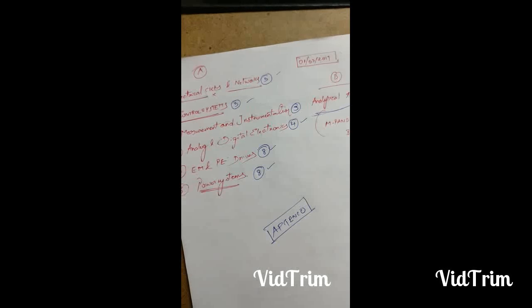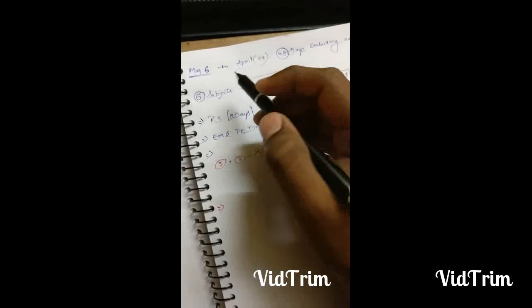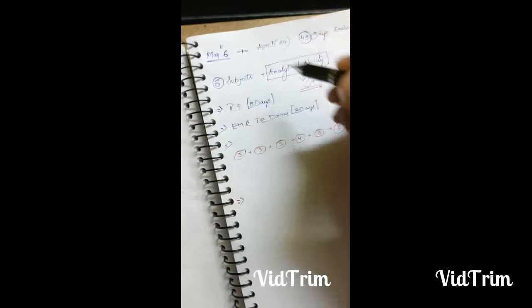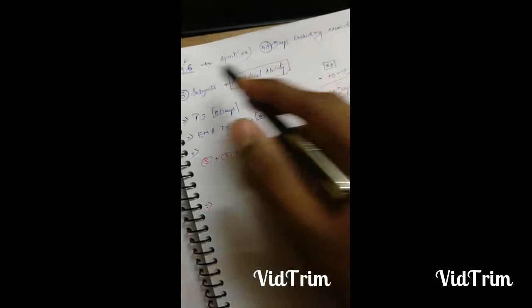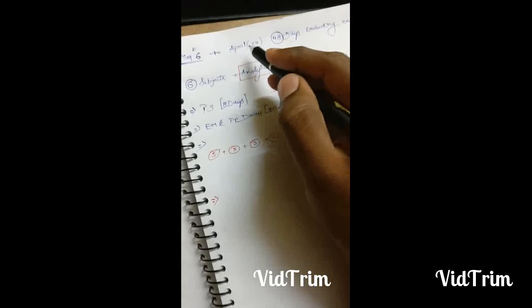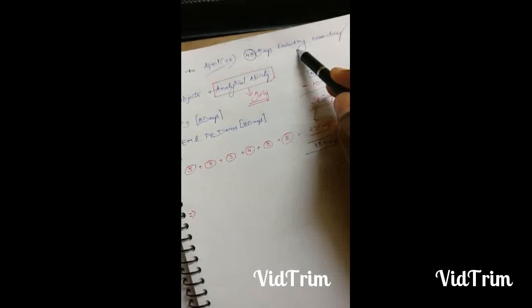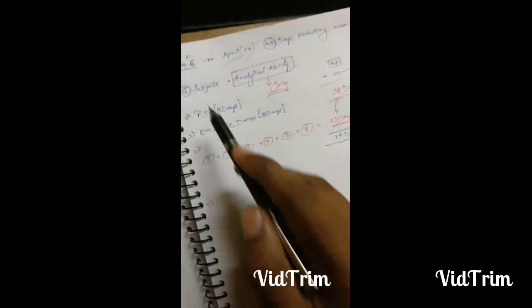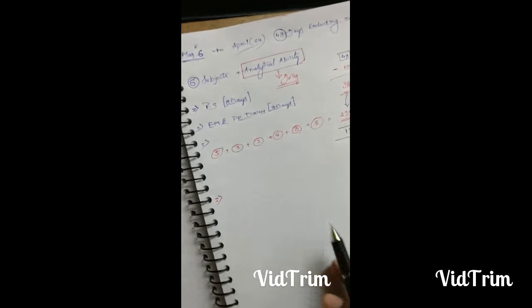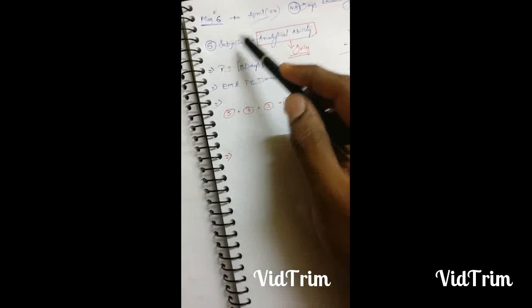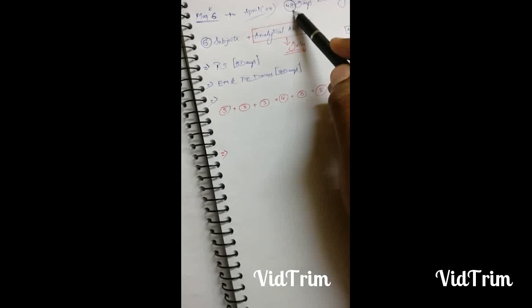The notification stated that we can apply online from March 6 onwards. I have divided the time from March 6 to the actual examination date, April 24th. So we have 48 days excluding the exam day. Six subjects plus analytical ability.